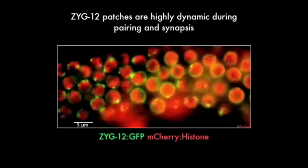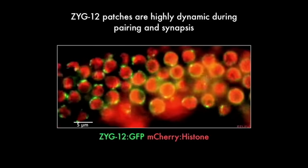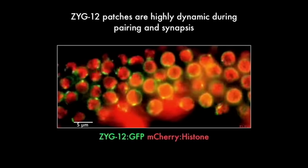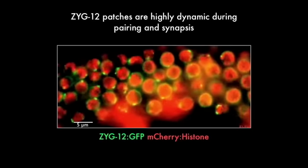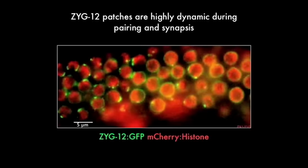During the stages of active pairing and synapsis, here on the left, these nuclear envelope patches are very prominent and they're moving very actively. And then as chromosomes complete synapsis towards the right of this image, the nuclear envelope patches dissipate, the proteins spread throughout the nuclear envelope, and the motion slows down dramatically.